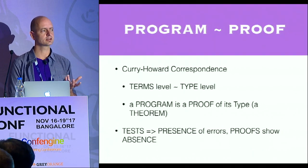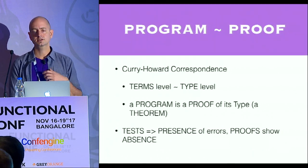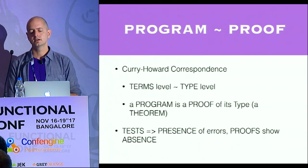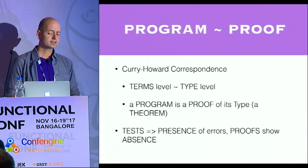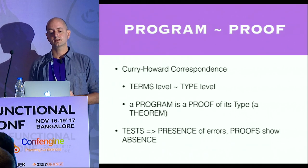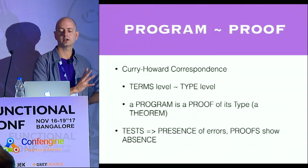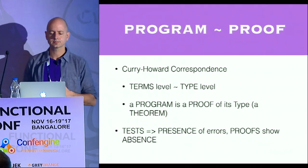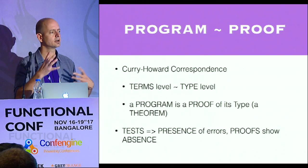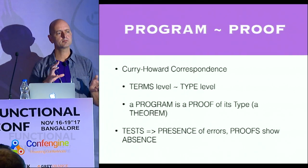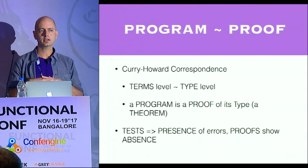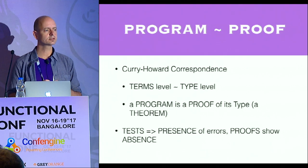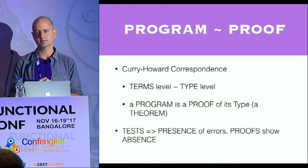With dependently typed programming, it's worth thinking about how this relates to testing. Testing shows the presence of errors; proofs show the absence of errors. That sounds great and you'd think we don't need to test, but in practice it's going to be somewhere in the middle. I think there are large classes of things that we shouldn't be testing — we should be proving them with type systems.